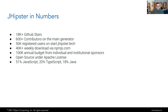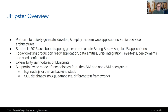Some numbers: we have around 80,000 stars and more than 600 contributors on the main generator. On our start.jhipster.tech tool, we have 50,000 registered users and more than 40,000 weekly downloads from NPM. We have a $100,000 annual budget from our sponsors, and we are completely open source — everything is developed in the open on GitHub.